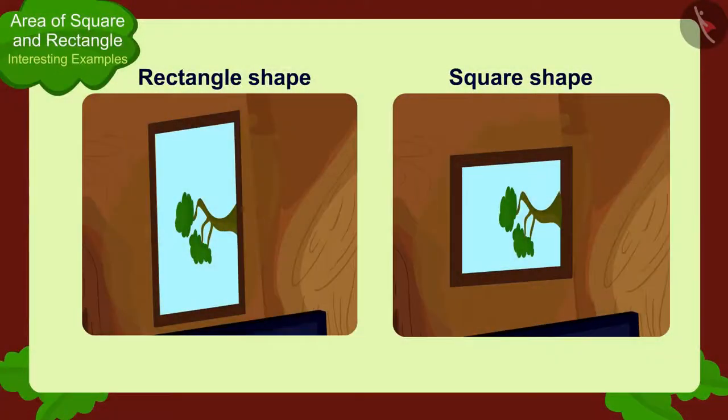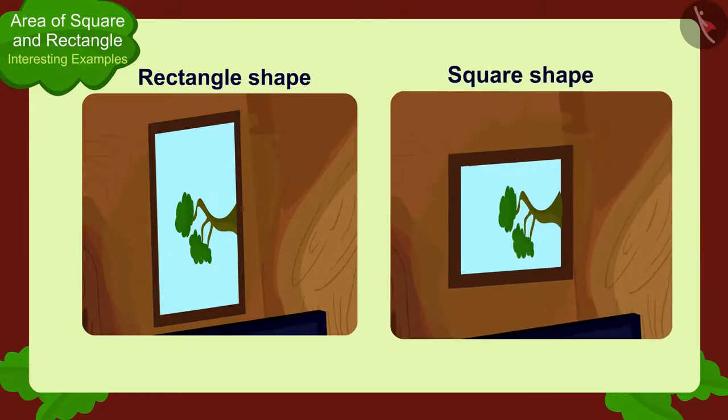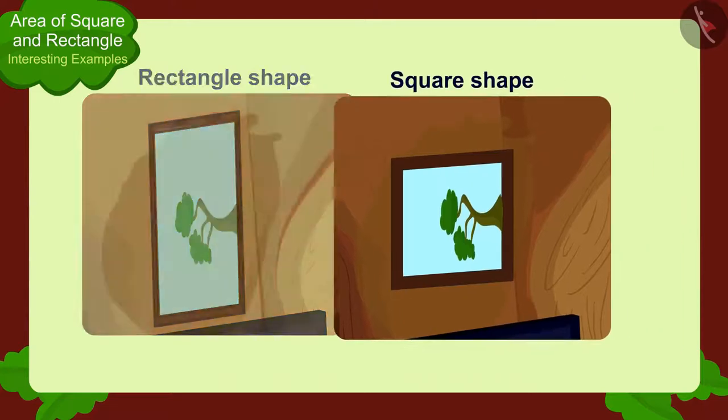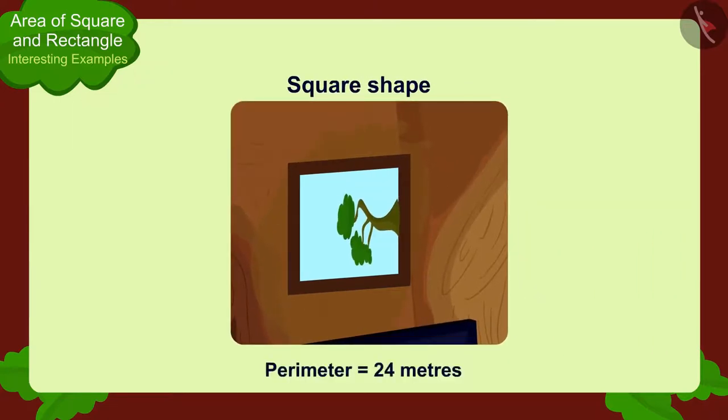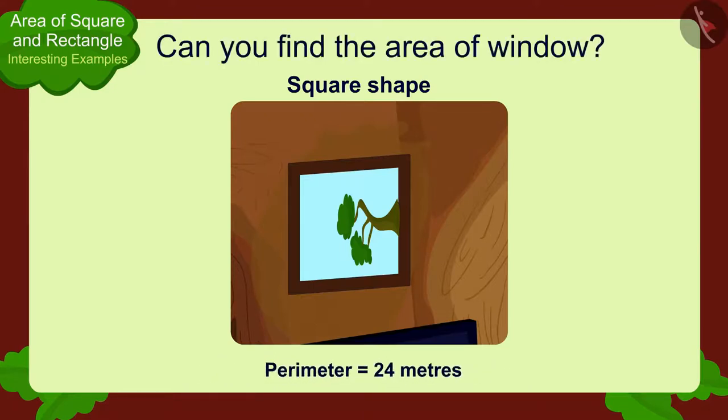And children, if Chanda's window would have been square instead of a rectangle and if its perimeter would be 24 meters, then can you find the area of Chanda's window? If you want, you can find a solution by stopping the video.